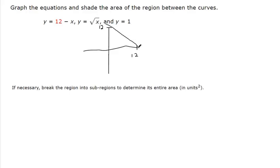So that line looks something like this. The line y equals 1 is a horizontal line that looks like this. And then y equals the square root of x, it's going to cross this line here, 1, 1.